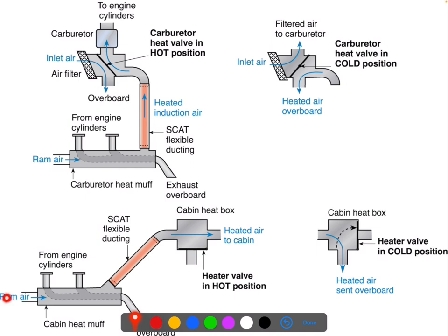We have a muff that goes around the exhaust system, typically the muffler. Ram air comes through, gets warmed up by close contact to the exhaust system, and via scat tubing goes up to our cabin heat box. We have a variable door — the more it's closed, the more air is deflected overboard; the more open it is, the more hot air goes into the cabin. This presents one particularly sticky issue: if we develop a crack or leak in any part of this exhaust system that is sent to the cabin, we're going to send carbon monoxide into the cabin.